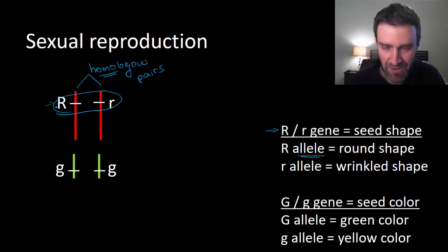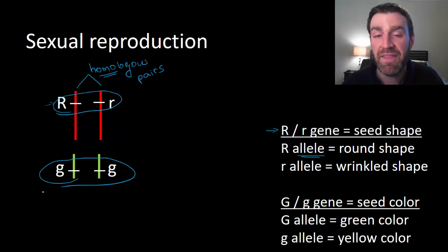Maybe remember that we use uppercase and lowercase letters because the uppercase letter dominates in what we see overall. So this would be an organism with a round shaped seed. And then this organism also has a different gene on a different chromosome pair that may code for what color the seed is. And maybe in this case they show yellow seeds because all they have are yellow alleles.